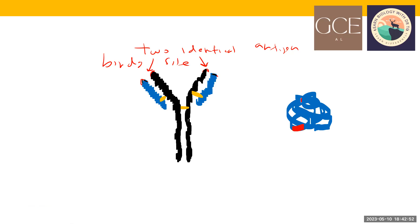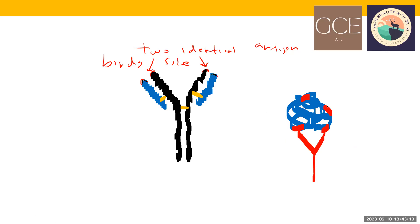The antigen has several epitopes — here, here, here. This is the antibody. If a binding site matches a specific epitope, it can bind there, and the other identical binding site can bind to a similar site on another antigen. So the antibody binds to the antigen, forming what we call an antigen-antibody complex.